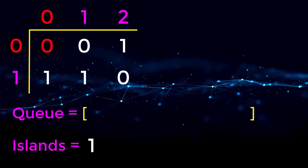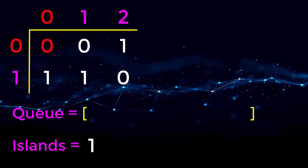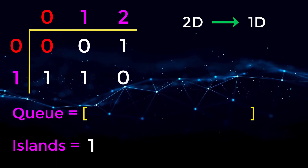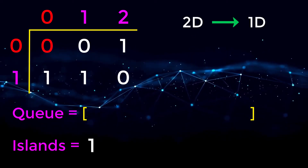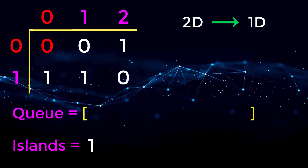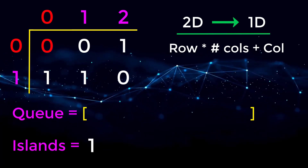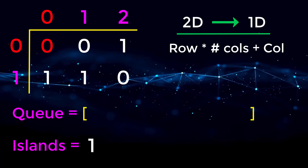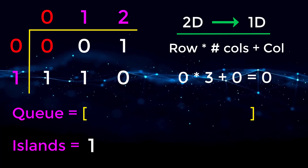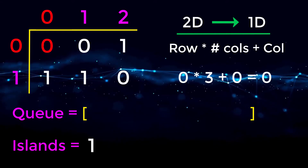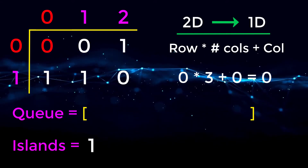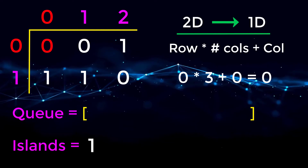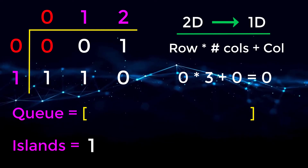For the queue we're going to use an integer — converting the 2D coordinate to a 1D coordinate instead of storing an array for each position. We do this by taking the row number times the number of columns plus the column number. So position zero zero would be zero times three plus zero, which equals zero. I have a whole video going into detail on this approach if you want more context, and the link will be in the description.